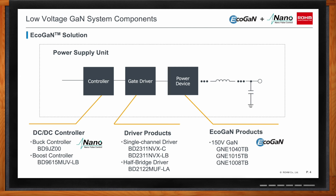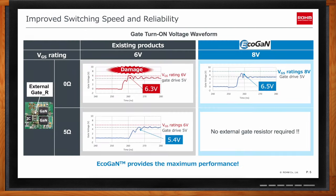What are the major advantages of Rome's EcoGaN technology? These systems typically have a nominal gate drive of 5 volts. To maximize efficiency, the goal is to switch on as quickly as possible. However, due to parasitic inductance and capacitance, high speed switching results in overshoot of the gate voltage. Most transistors have a gate-to-source voltage limit of only 6 volts, so it doesn't take much overshoot to result in damage, as illustrated in the red curve.